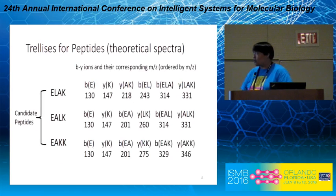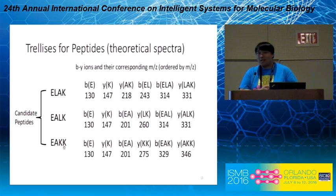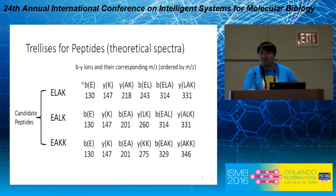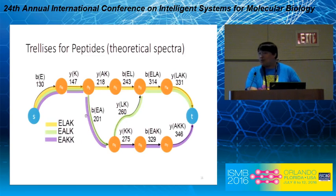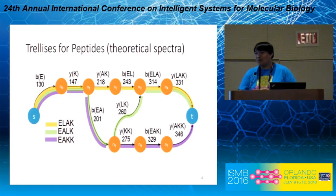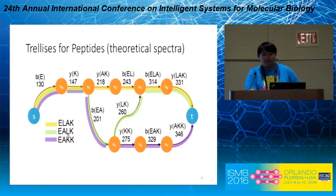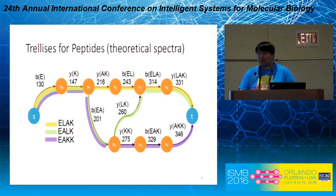Trellises are representations for general data sequences, including peptides. Suppose for a certain observed spectrum we retrieve three simple peptides from the database as candidates. To construct the trellis on these peptides, we first write out the m/z values of the b and y ion sequences — essentially their theoretical spectra — as data sequences, and feed them as input to the trellis construction algorithm. As a result, we get a trellis structure with three colored paths from the source node to the target node, each corresponding to the theoretical spectrum of a specific peptide. The shared information among the theoretical spectra is effectively identified by the shared structure, so the trellis representation of peptides is very efficient.